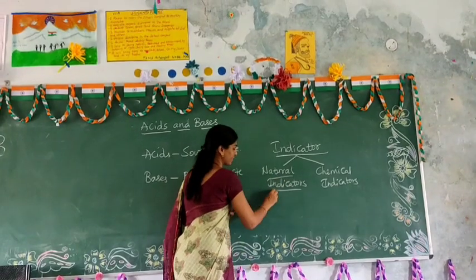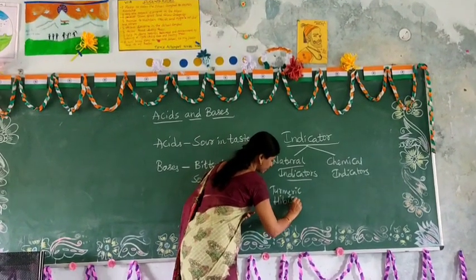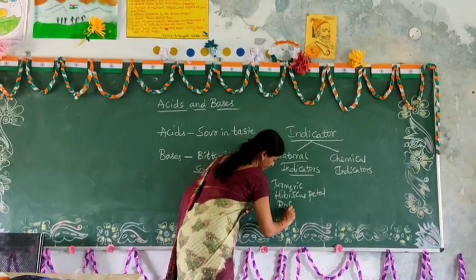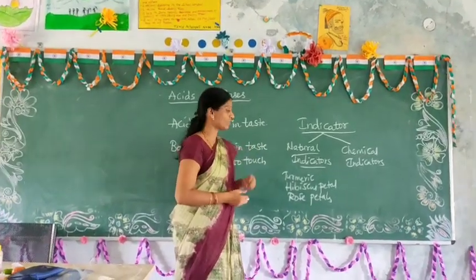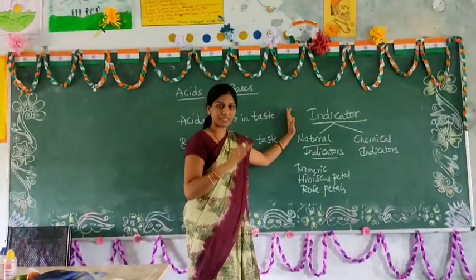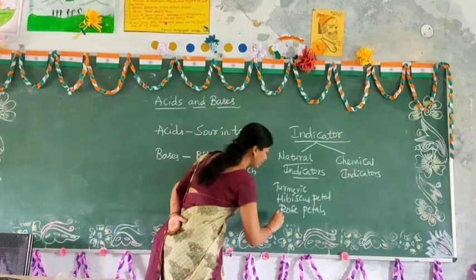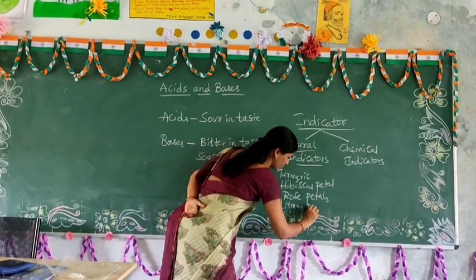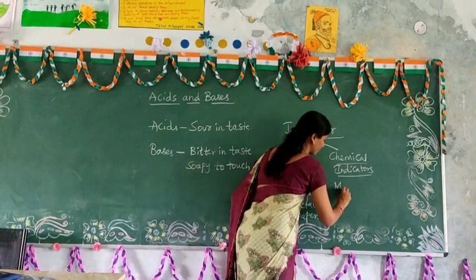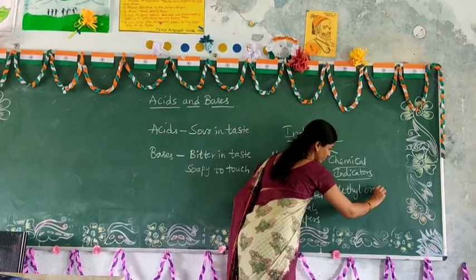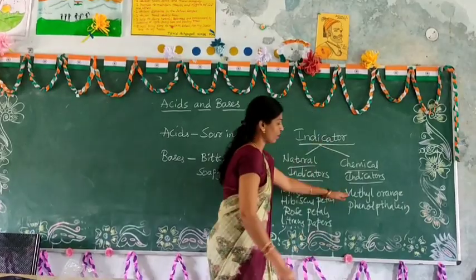Natural Indicators include Turmeric Powder, Rose Petals, Beetroot, and Mango Leaves. These can be used as indicators for testing whether a substance is an Acid or a Base. With the help of natural materials like Rose Petals, we can also prepare Litmus Papers. Litmus Papers are prepared naturally. Chemical Indicators are Methyl Orange and Phenolphthalein.